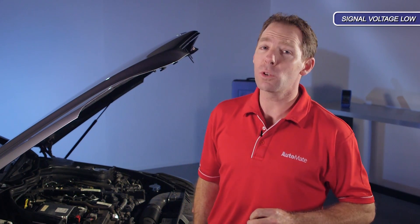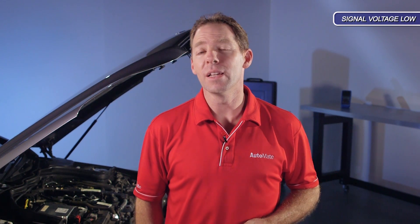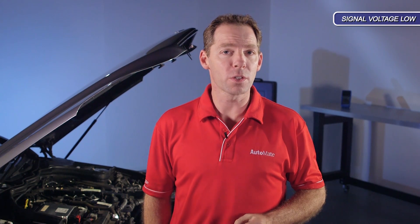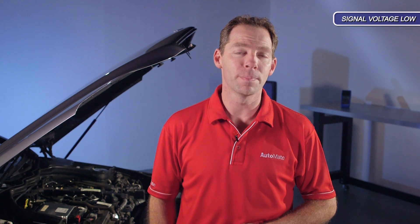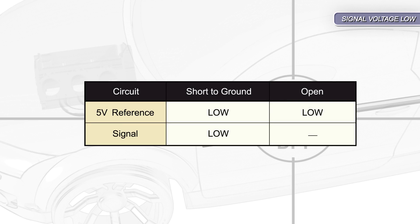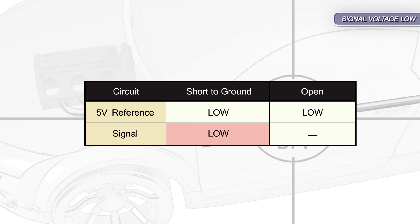A logged DPF pressure sensor signal voltage low DTC indicates the voltage on the signal circuit has been below the minimum expected value for a predetermined time. This could be caused by an open or short to ground in the high reference circuit, or a short to ground in the signal circuit.